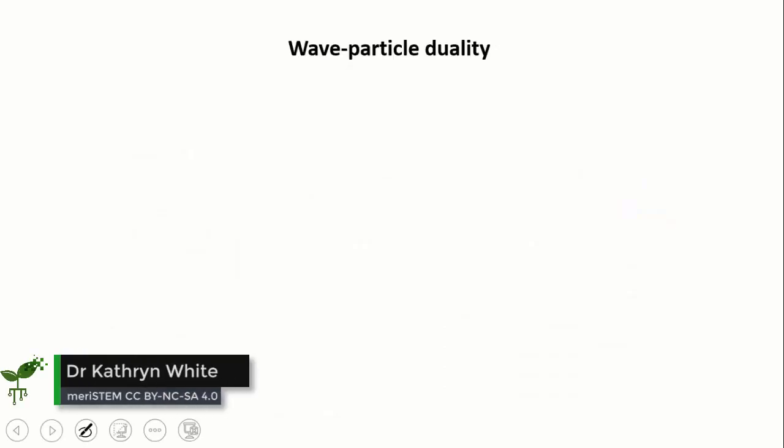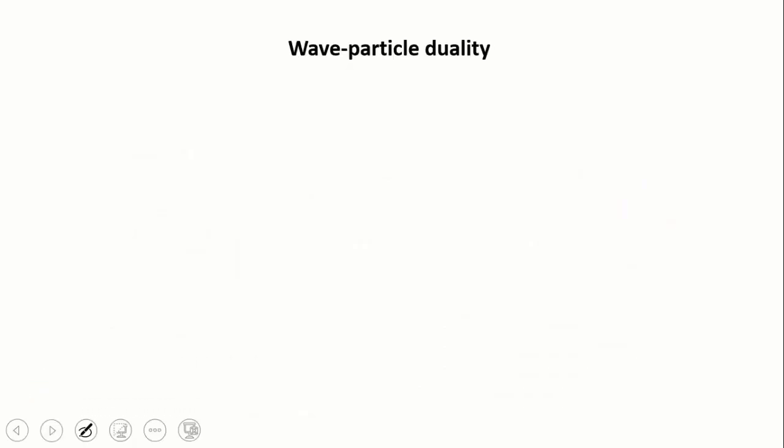The tricky thing about light is that although it's well described as a wave, it turns out sometimes to behave like a particle. In fact, this is one of the things that Einstein is famous for discovering, and it's called wave-particle duality. It turns out to apply to the electron and other tiny particles as well.